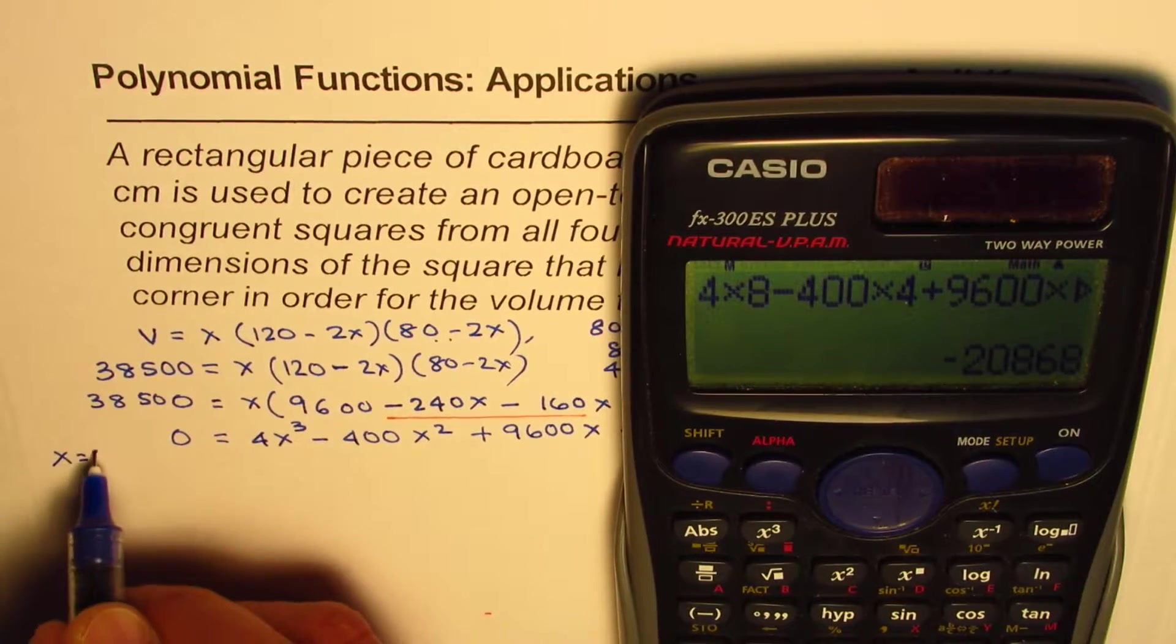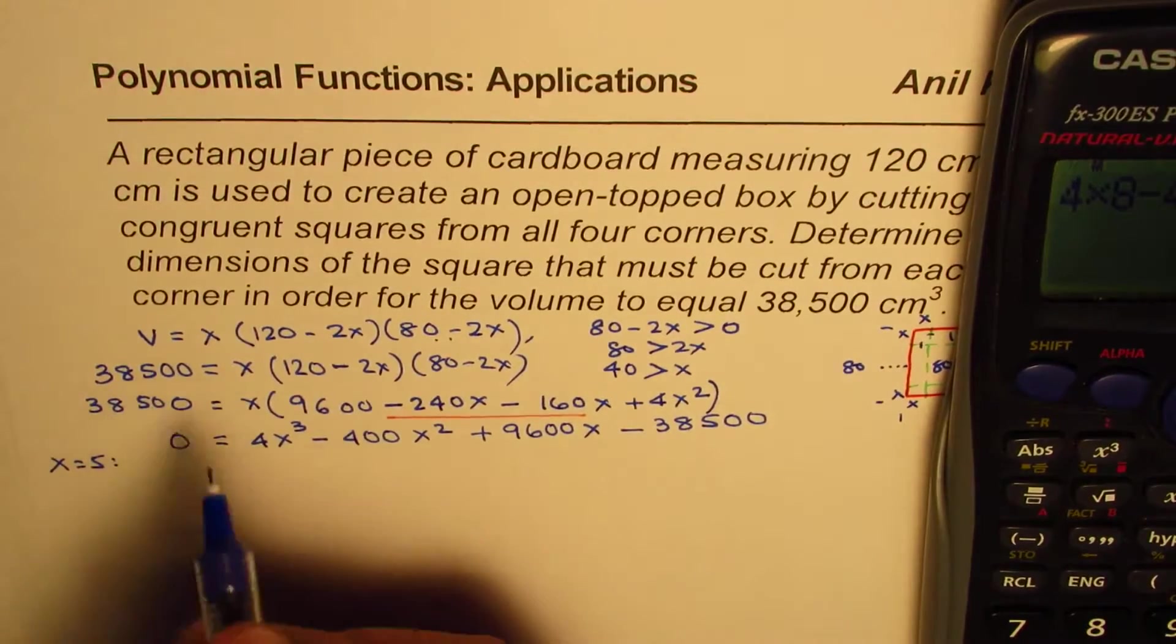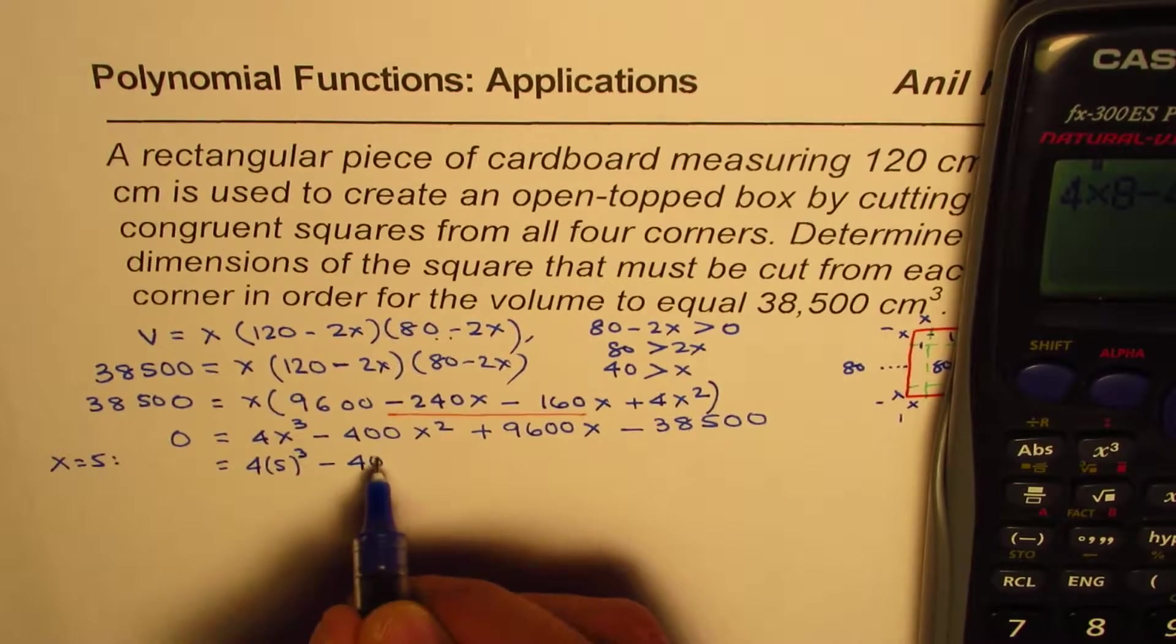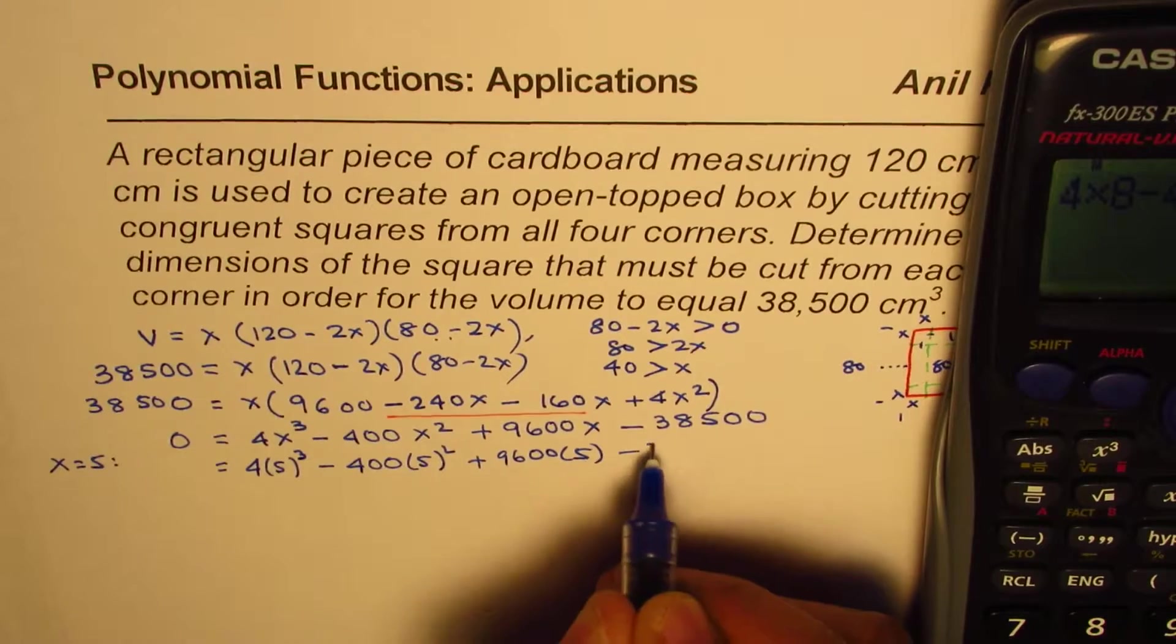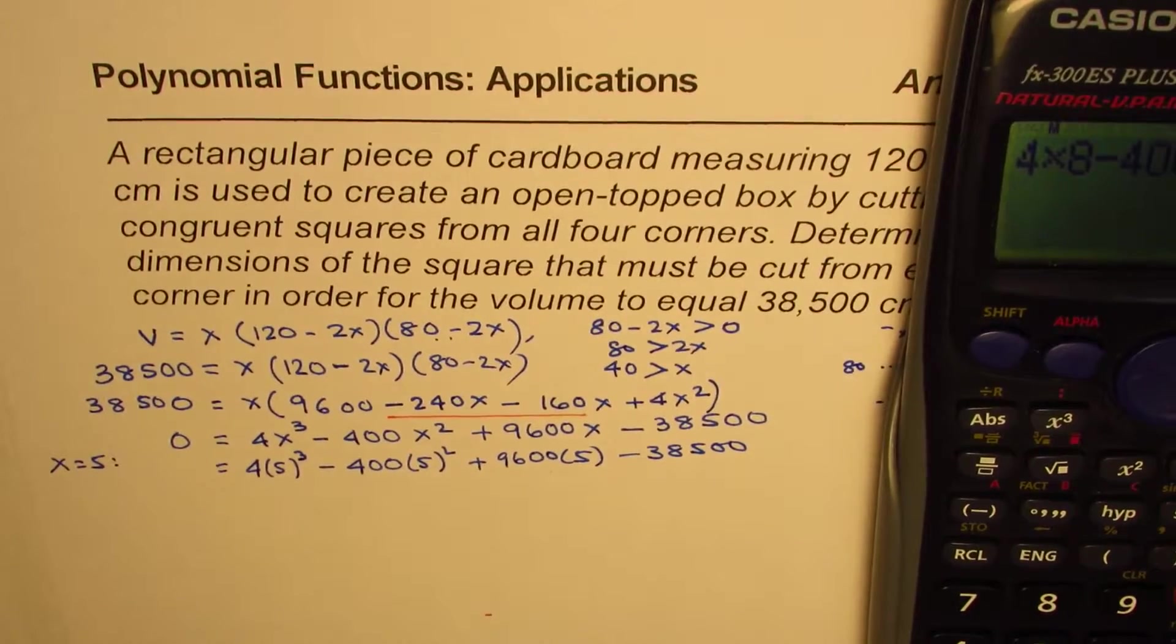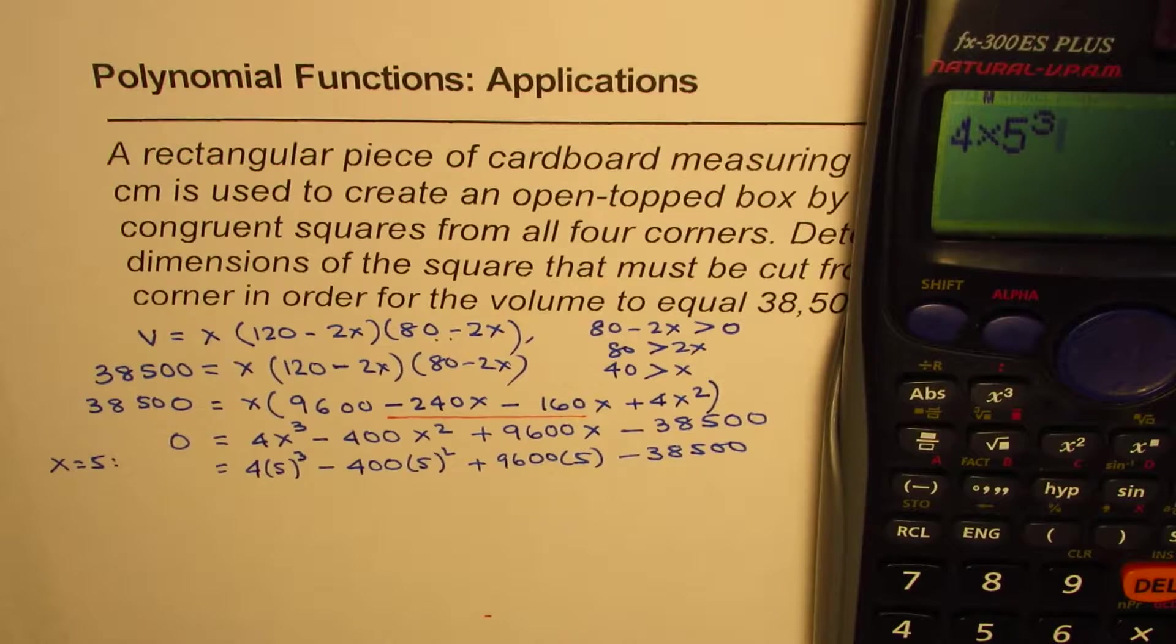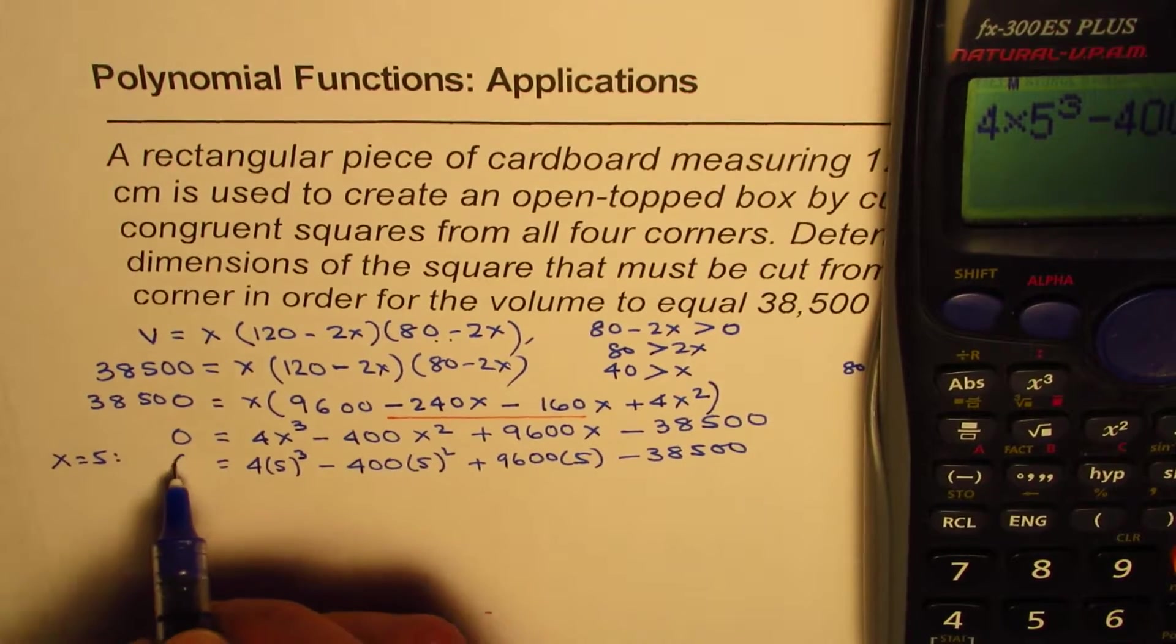So now let us try X equals to 5 and see what we get. So we will put X equals to 5 here. If I write 5 here, I get 4 times 5 cubed minus 400 times 5 squared plus 9600 times 5 minus 38,500. And that gives us 0. So we do get 0 for X equals to 5.